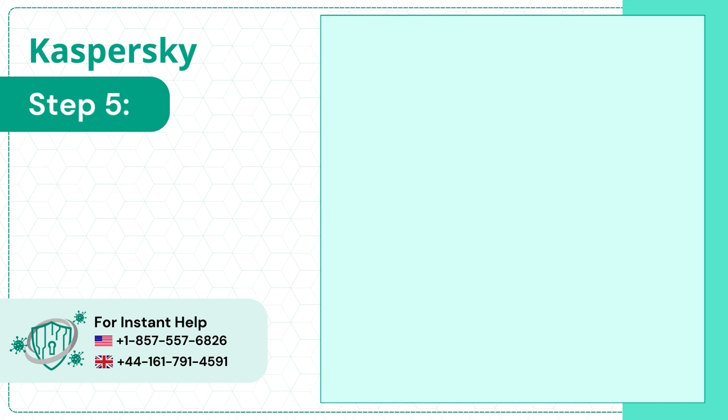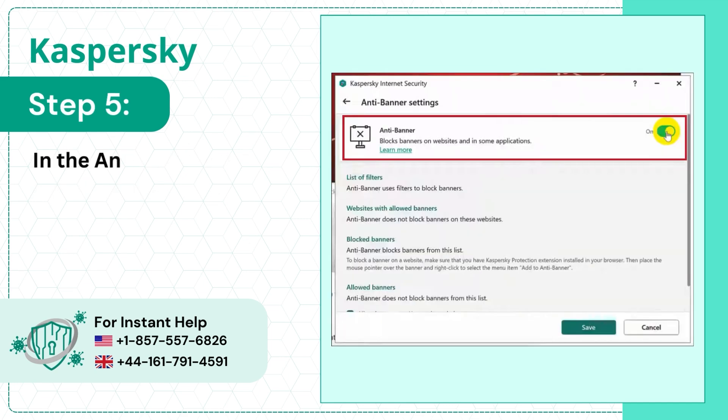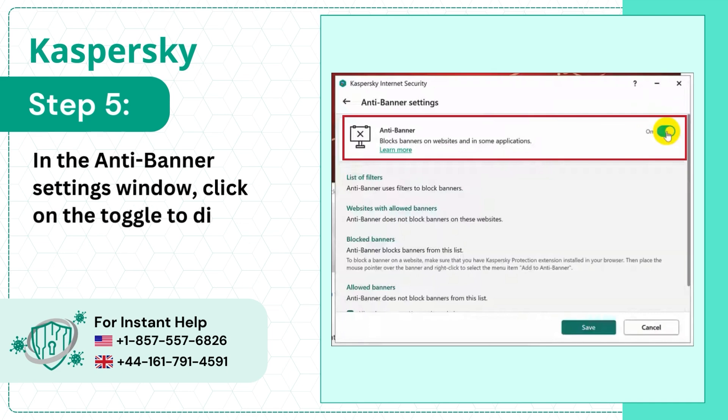Step 5: In the Antibanner settings window, click on the toggle to disable Kaspersky Ad Blocker.